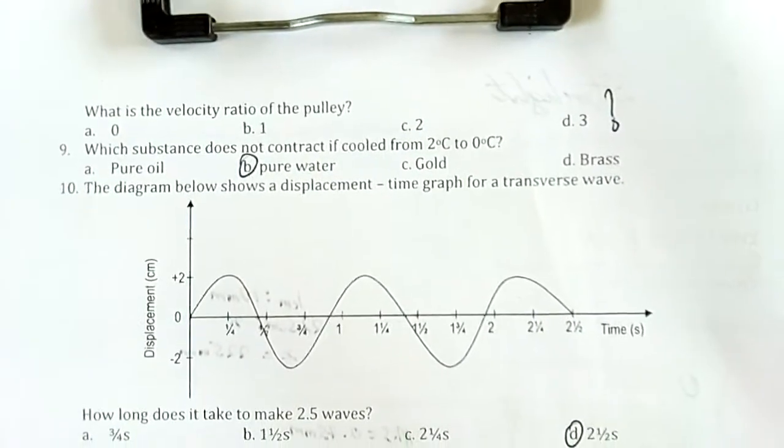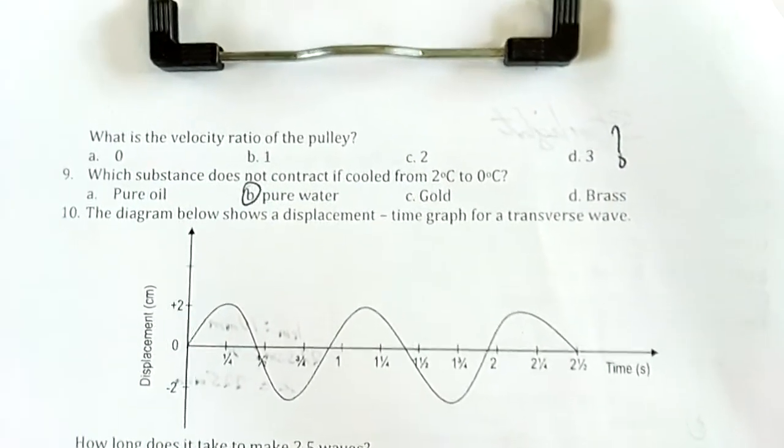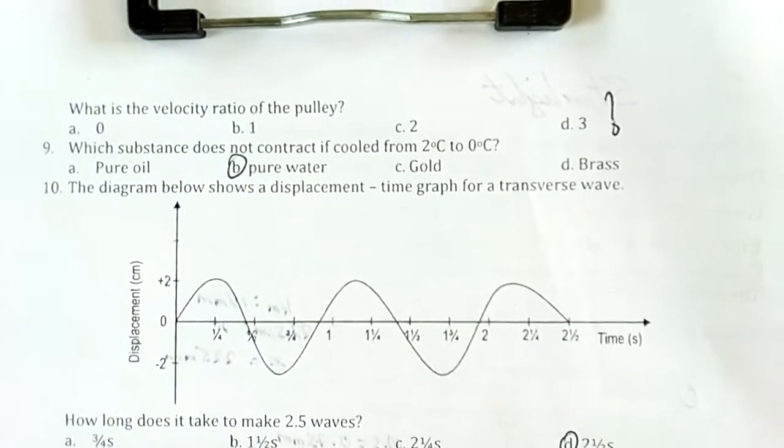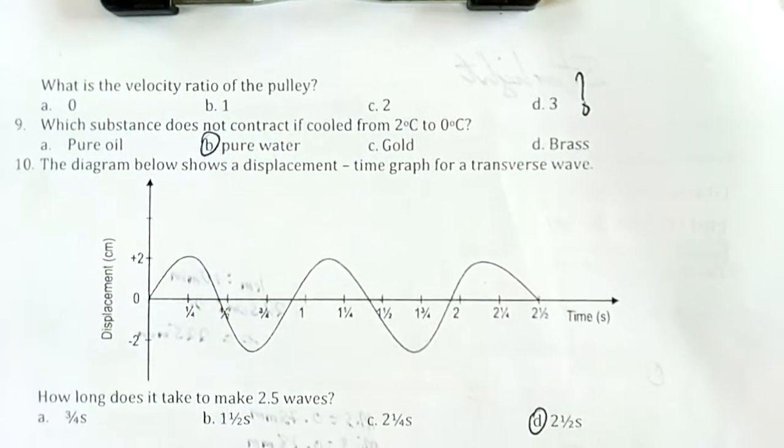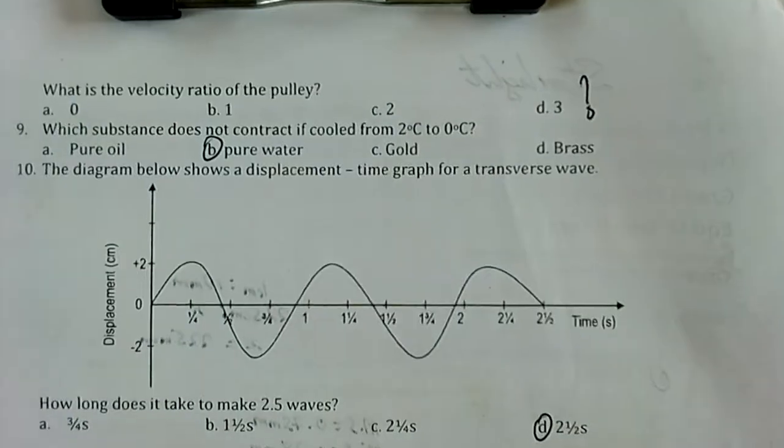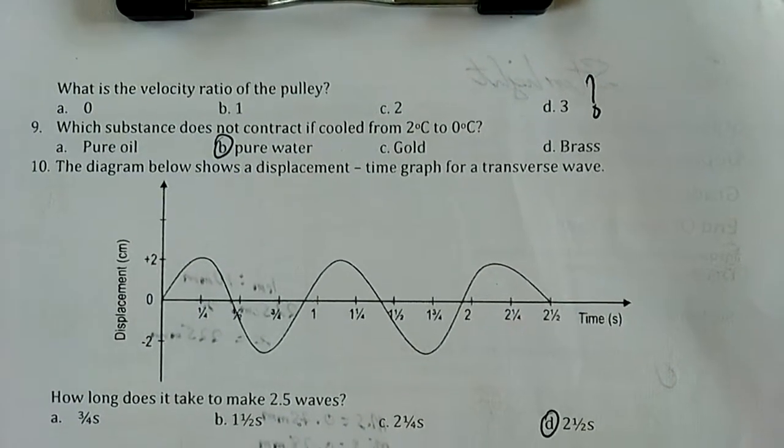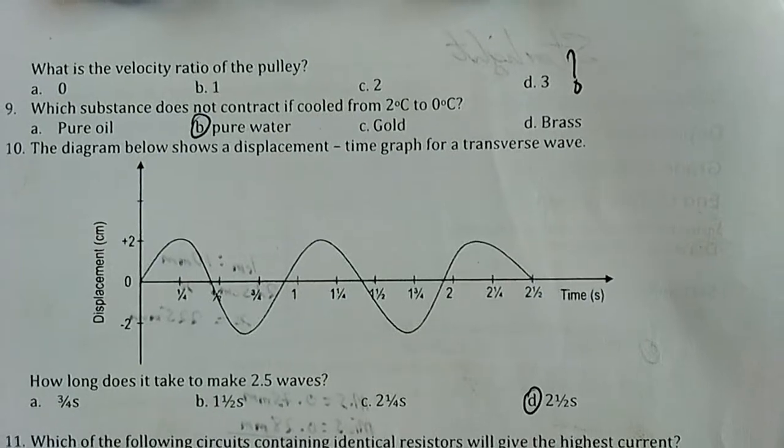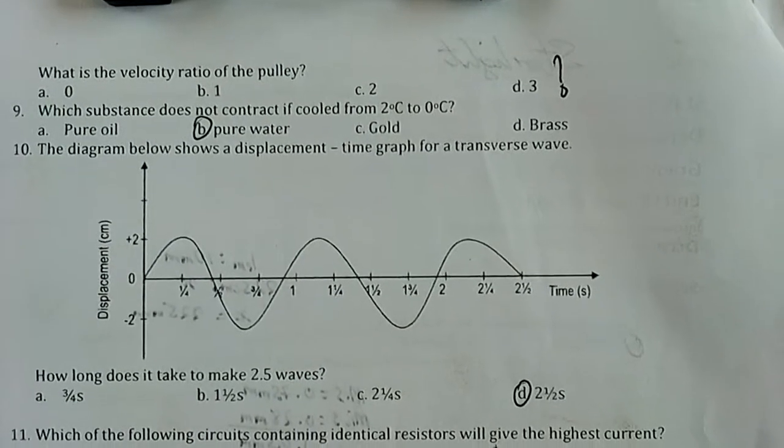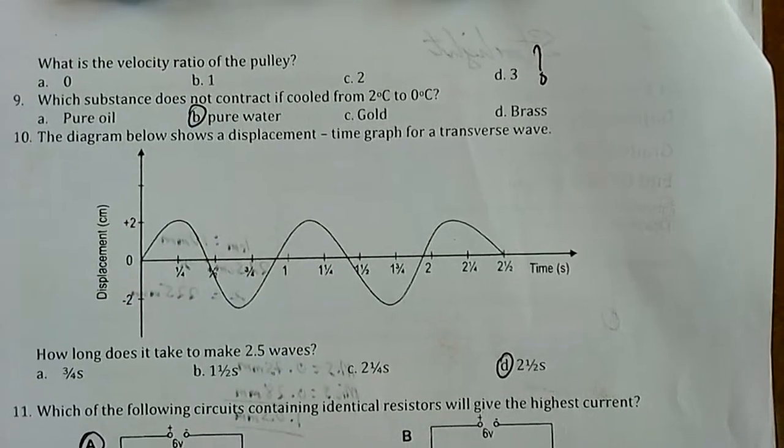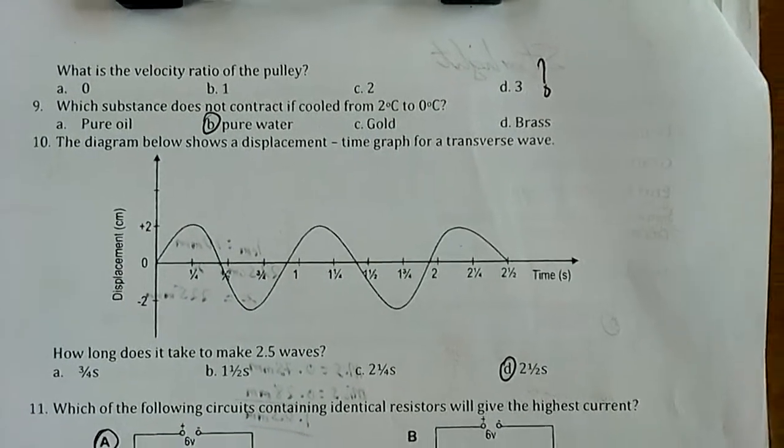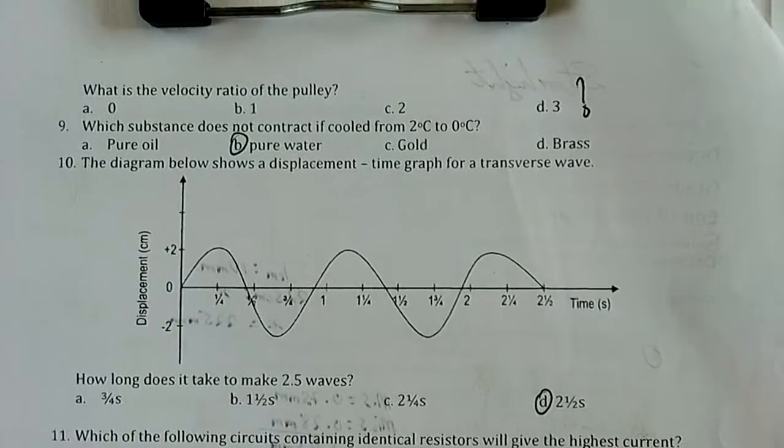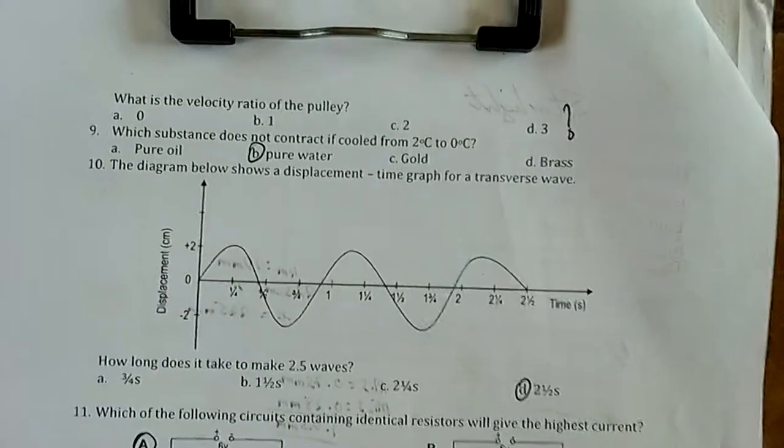Number 9: Which substance does not contract if cooled from 2 to 0 degrees? That's pure water. The anomalous expansion of water below 4 degrees. All liquids contract up to their freezing points, but water contracts only up to 4 degrees. After 4 degrees, it begins to expand due to the formation of extended hydrogen bonds. By the time it reaches zero degrees, it begins to freeze. These extended hydrogen bonds cause ice to be less dense than liquid water. So the answer is B.